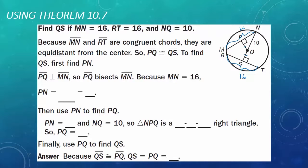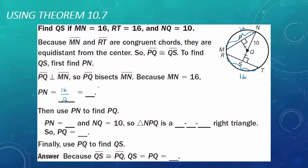Once I know that, I can go about solving for the length of QS. Because line segments MN and RT are congruent chords, they are equidistant from the center. Line segment PQ is congruent to line segment QS. To find QS, first find PN. I need to first find the measure of PN because line segment PQ is perpendicular to line segment MN, which means PQ bisects MN. Because MN is 16, I can find PN by taking 16 divided by 2 — bisects means to cut in half — so line segment PN is 8.